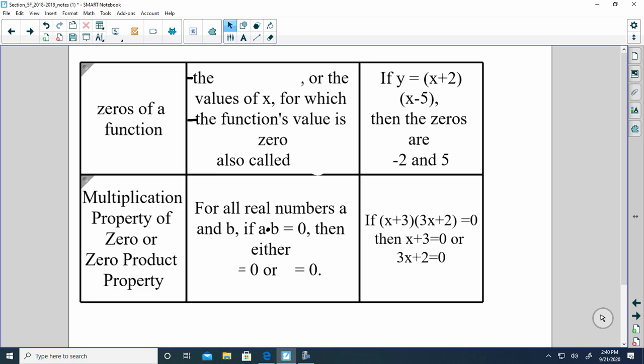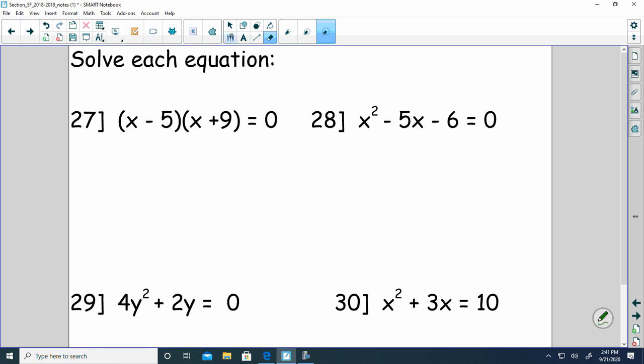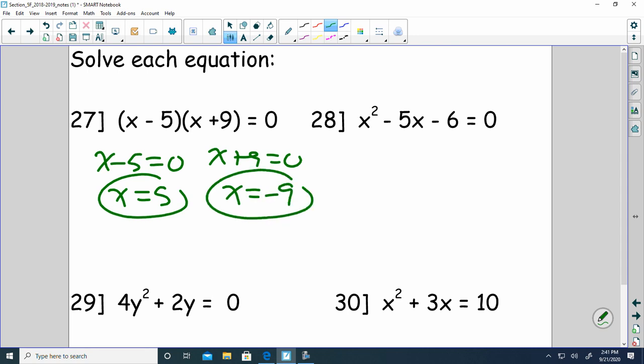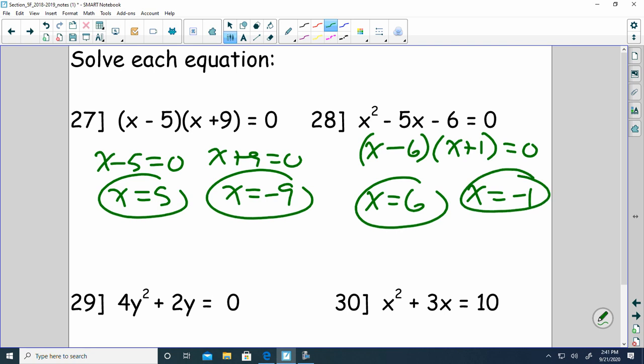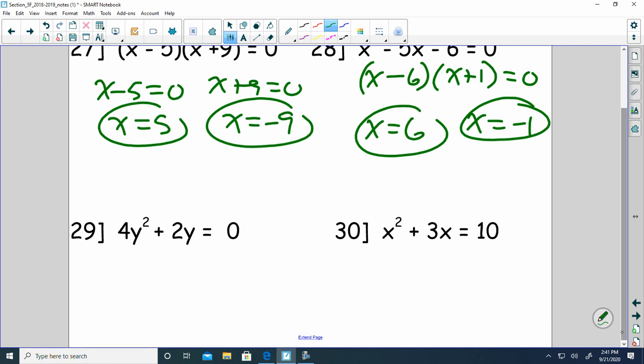Zeros of function. The x-intercepts are the zeros of the function. So where it crosses the x-axis or what are the solutions to the problem are the zeros of the function. If you look at the very bottom right corner, you have x plus 3 and 3x plus 2. Set them equal to 0. You set each binomial equal to 0 and solve it. So on this particular problem, you're going to go x minus 5 is equal to 0. So x equals 5. That's one solution. x plus 9 is equal to 0. So negative 9 is your other solution. That's where it would cross the x-axis at 5, 0 and negative 9, 0. This one, we want to factor it first. So I'm going to have x minus 6 and x plus 1 is what it factors to. Set equal to 0. So this first one would give me x equals 6. The second one would give me x equals negative 1.